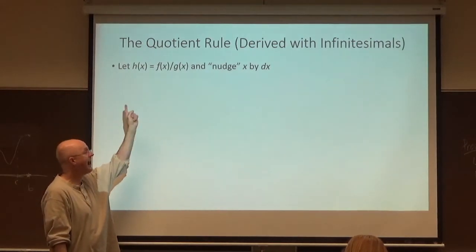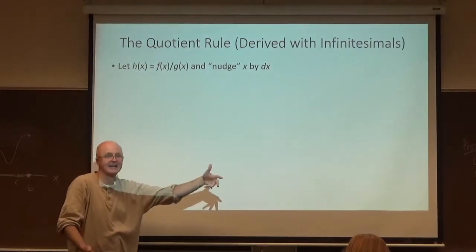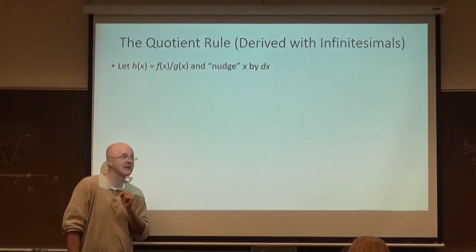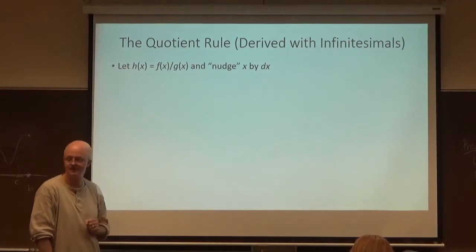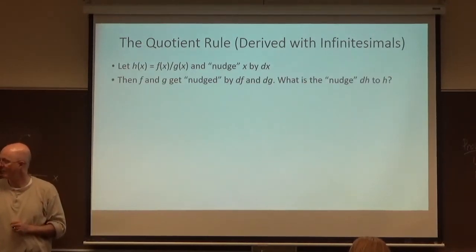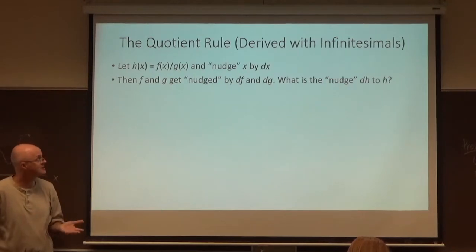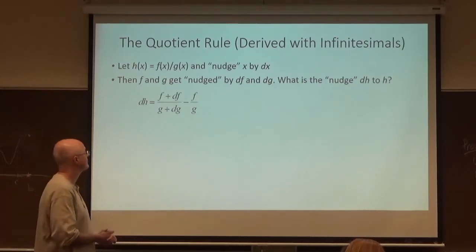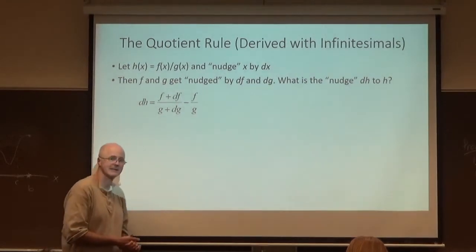We want to find how h gets nudged when x gets nudged. By nudge, I mean changed by infinitesimal amount dx. Well, f and g are going to get nudged by df and dg. What's the nudge dh to h? There it is as a difference of two fractions. Does that make sense?